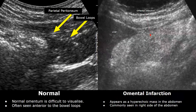Omental infarction is a rare condition caused by the interruption of blood supply to a portion of the omentum, leading to ischemia and necrosis. It can be primary, idiopathic, or secondary, due to torsion, trauma, or vascular compromise. On ultrasound, an omental infarction appears as a hyperechoic mass.